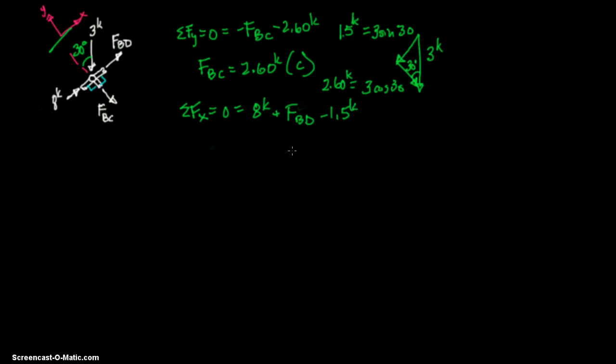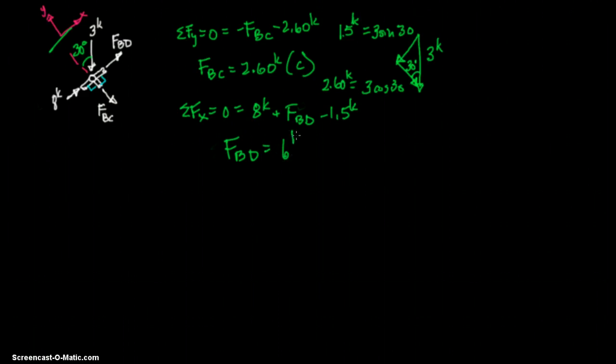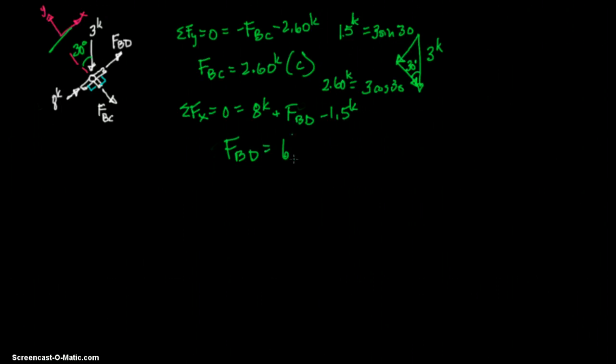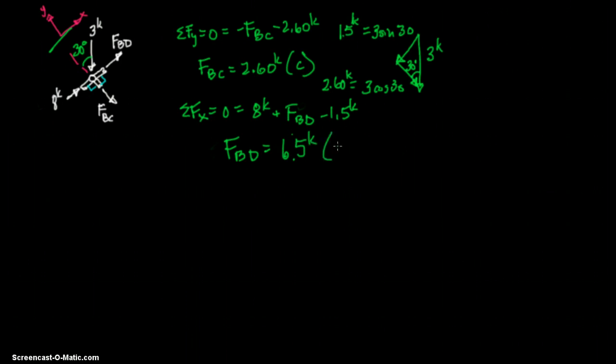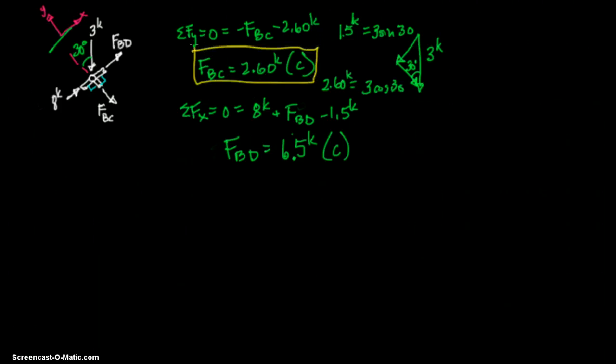8 minus 1.5 is 6 kips, and then when we flip it over to the other side, it's going to be negative 6 kips. So we know FBD is 6 kips in compression. Did I do it? No, I didn't do it. It's 6.5. I didn't do the math right. 8 minus 1.5 is 6.5 kips, and that's compression, since it's negative. And now we have those two answers, and I'm going to circle them. We have FBC and FBD.